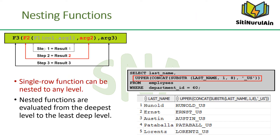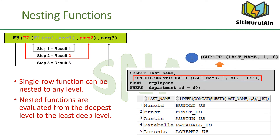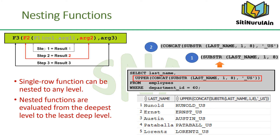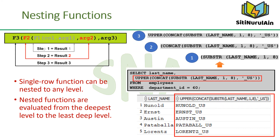Single-row functions can be nested to any depth. Nested functions are evaluated from the innermost level to the outermost level. The slide example displays the LAST_NAME of employees in department 60. The evaluation of the SQL statement involves three steps: first, the inner function retrieves the first eight characters of the last name; second, the outer function concatenates the result with '_US'; third, the outermost function converts the result to uppercase. The entire expression becomes the column heading because no column alias was given.